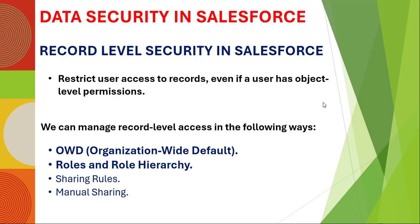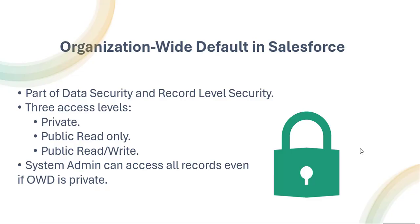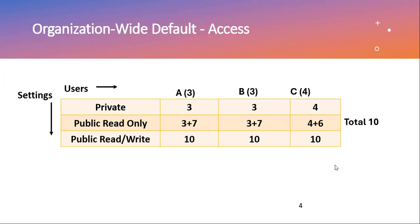The video links for object level security, field level security, and permission sets are given in the description box. Now, what is Organization-Wide Default in Salesforce? OWD is a part of data security and record level access. It has three access levels: private, public read-only, and public read-write. The system admin can access all records even when OWD is private.